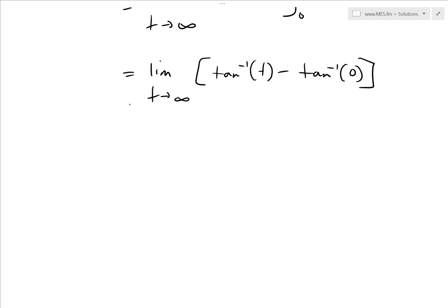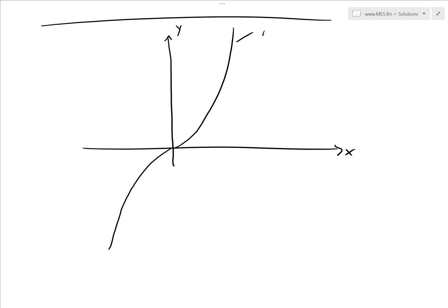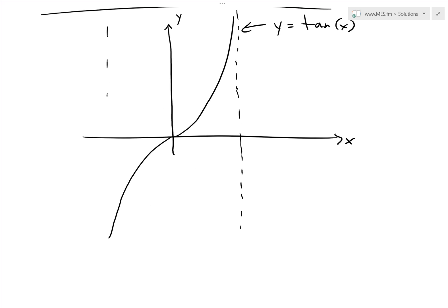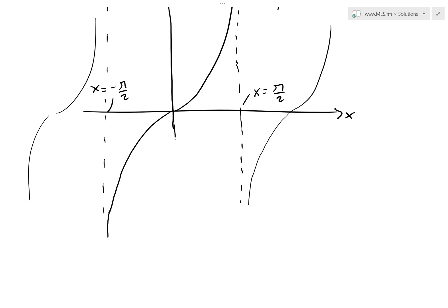To evaluate this, let's recall how the graphs look. For the regular tan curve, y equals tan of x, it has vertical asymptotes at x equals pi over 2 and x equals negative pi over 2, where it approaches infinity and negative infinity respectively, repeating periodically.